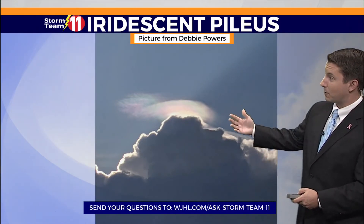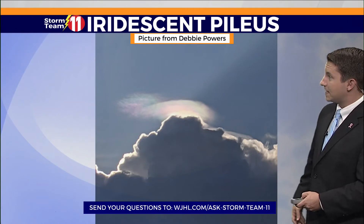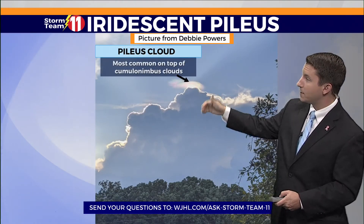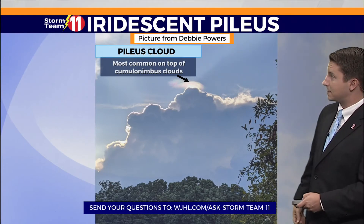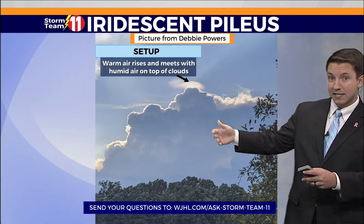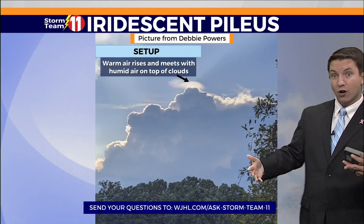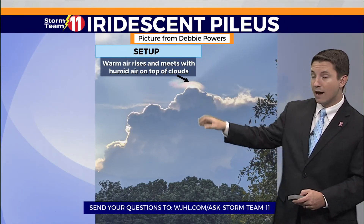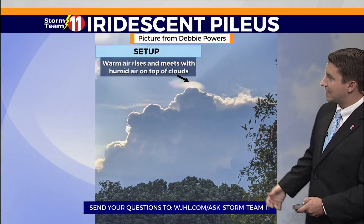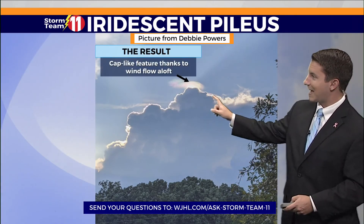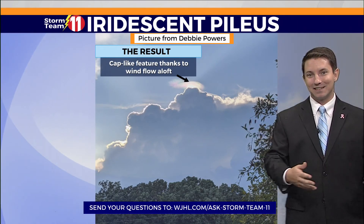Now the pileus part — that's one of my favorite clouds that you could see right here. It's that cap-like feature most common on top of cumulonimbus clouds like you see right there. Basically, warm humid air rises in the case of a strong updraft of a thunderstorm. It meets moisture aloft, or on top of the clouds, and as that warm air punches through the moisture, you get this cap-like feature thanks to some of the wind flow aloft.